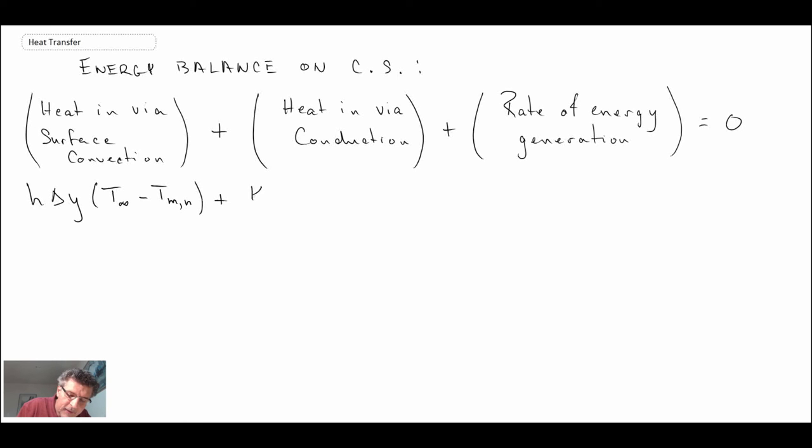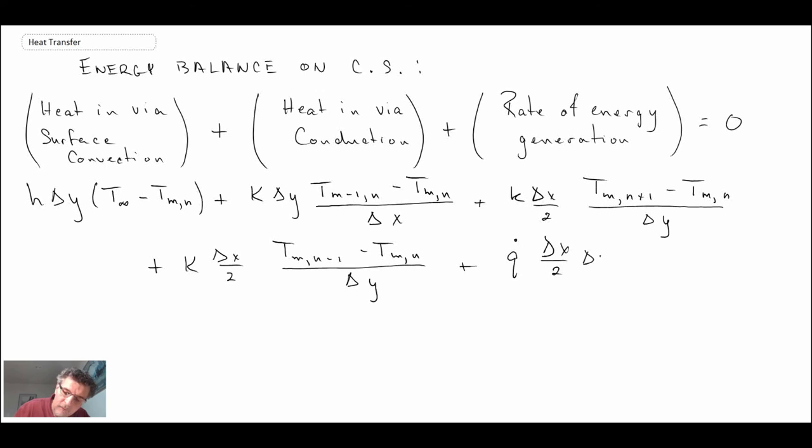And then going through and applying Fourier's law for conduction. And that last term, this is essentially delta v, the volume of our control surface or control volume.